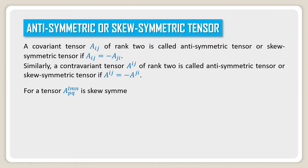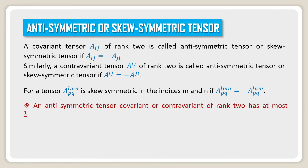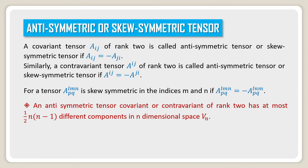For a mixed tensor a^lm_pq, it is skew-symmetric in the indices l and m if a^lm_pq equals minus a^ml_pq. An antisymmetric tensor, covariant or contravariant, of rank 2 has at most half n(n minus 1) different components in an n-dimensional space V_n.